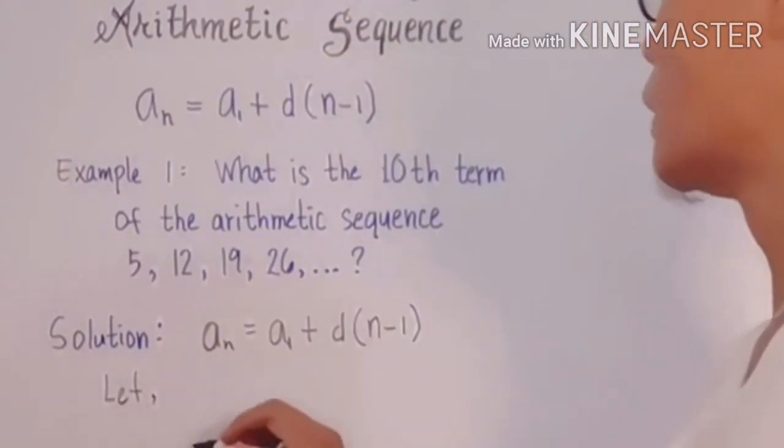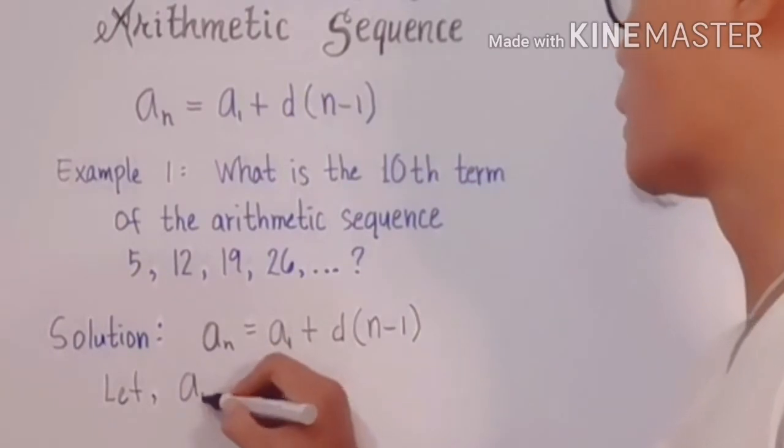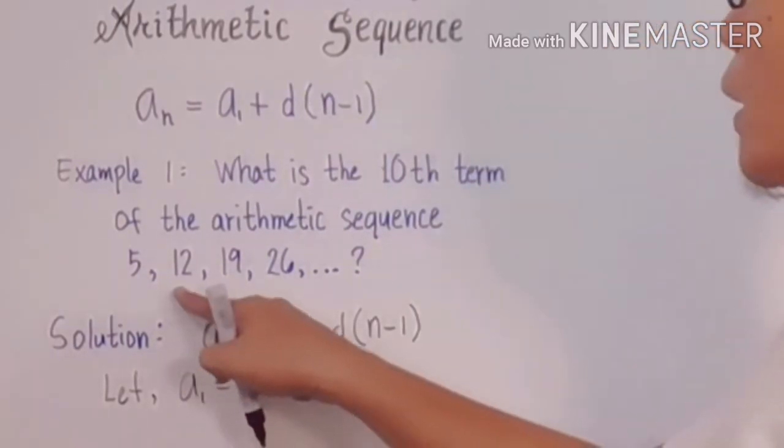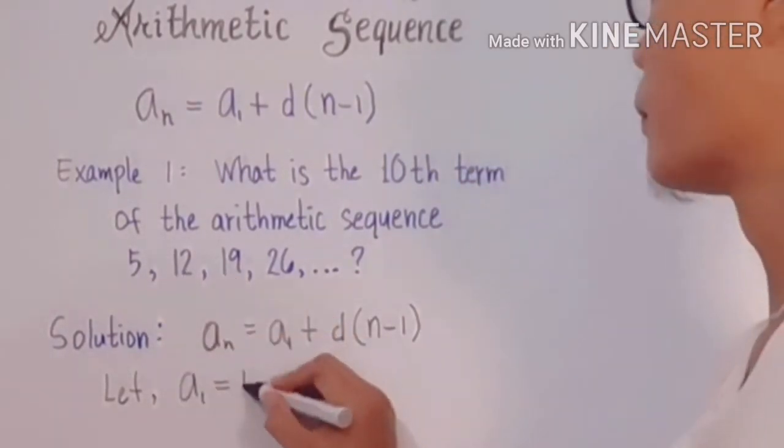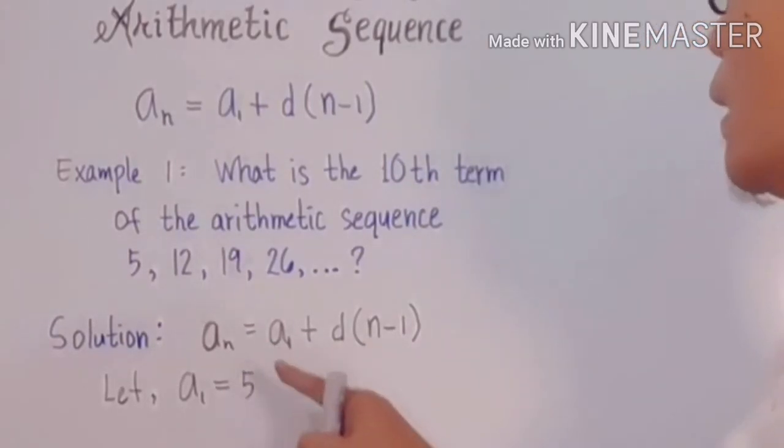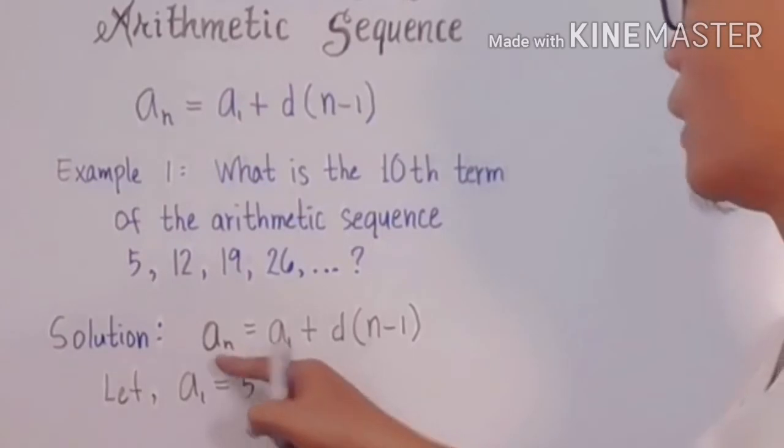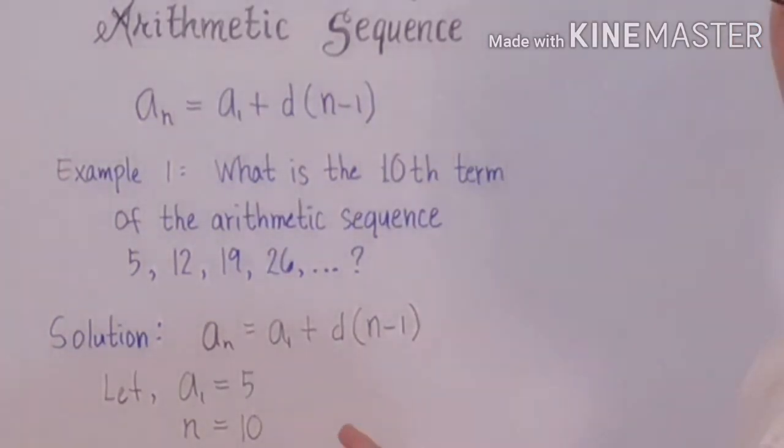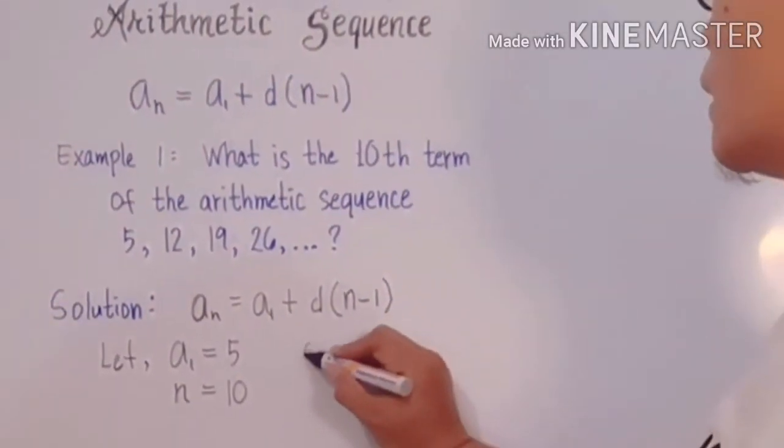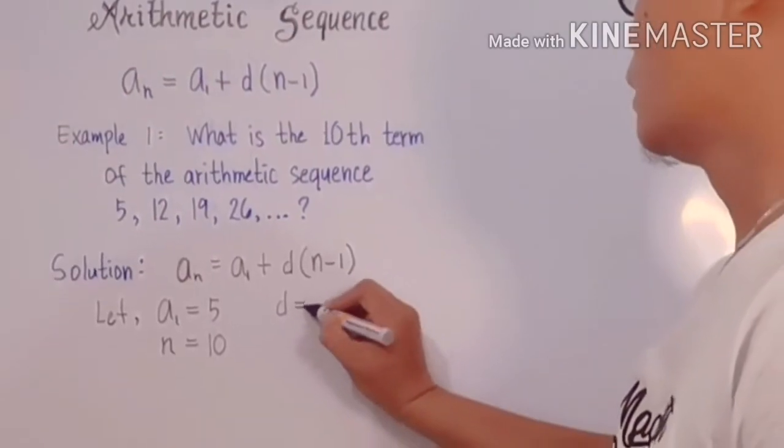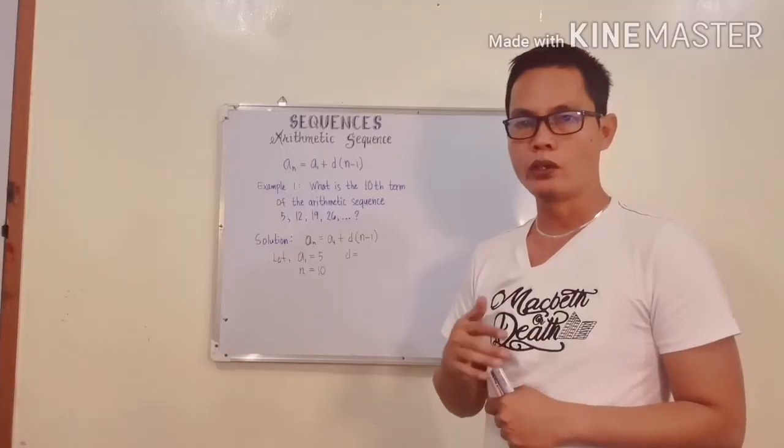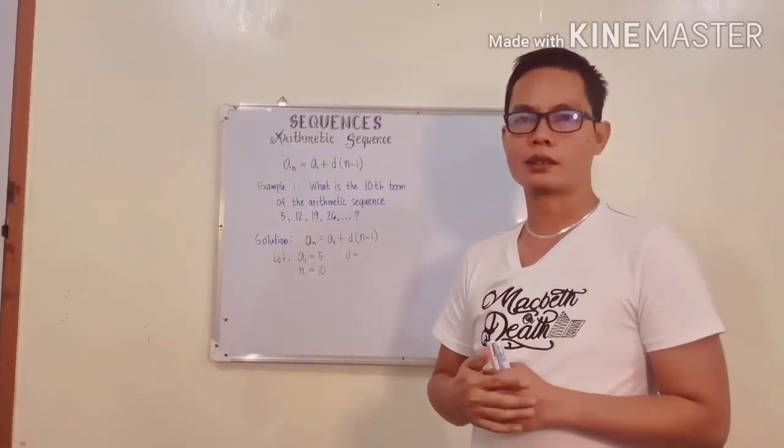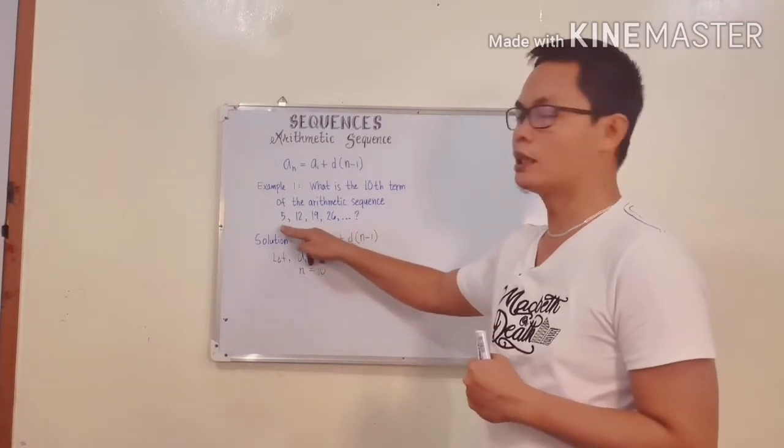Before we use that formula, let us assume that the value of the first term a₁ from this given is 5. The other given here aside from the first term or the a₁ is the value of n which we are going to solve. We are going to solve for the 10th term, so the value of n is 10.